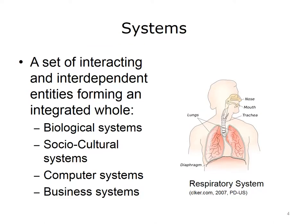Systems are groups where individual pieces work together as a whole to complete tasks. The individual pieces can be people, parts, components, pieces, units, or whatever makes up the collection or group. For example, a biological system is a group of organs working together to provide life requirements such as circulation, respiration, digestion, and reproduction.